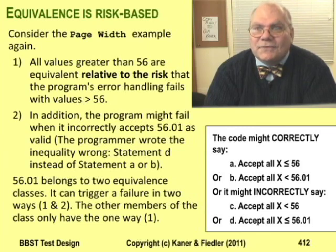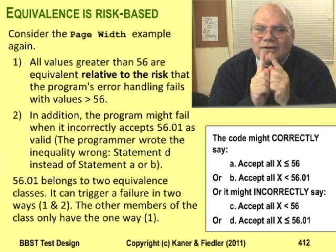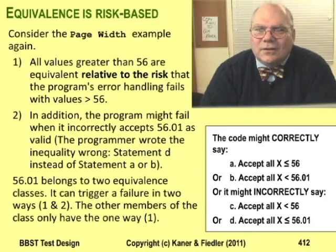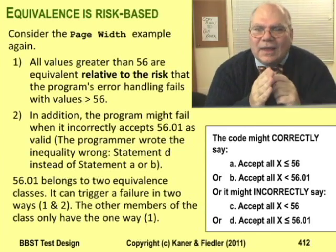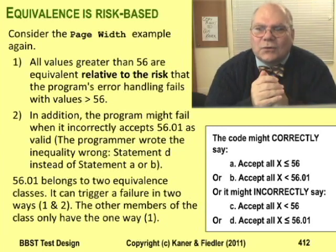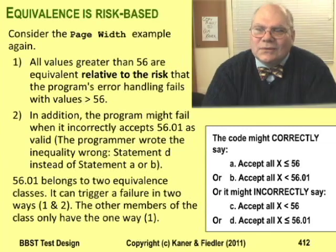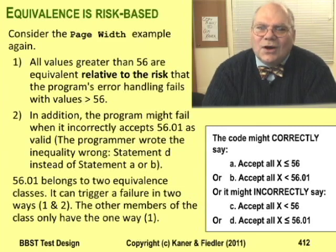The programmer might misspecify the boundary and accept 56.01 as valid. There's only one test that can demonstrate that error — the equivalence class of values that can demonstrate that error contains only one value: 56.01. So 56.01 belongs to two equivalence classes: one that contains all the numbers bigger than 56, organized around the too-big-number risk, and another that contains just 56.01, organized around the wrong boundary risk. So relative to one risk, 56.01 and 57 are equivalent, but relative to the other risk, 56.01 and 57 are not equivalent. Equivalence classes are always organized around a risk.